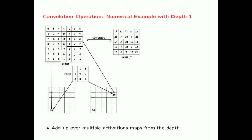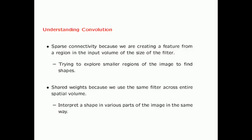This example was shown for depth 1. If you have depth greater than 1, you add up the multiplications over the multiple activation maps. The convolution is essentially your weight matrix — there is sparse connectivity because you create a filter from a small region of the input volume, and there are shared weights because you slide the same filter across the entire spatial volume.